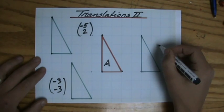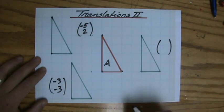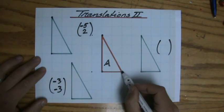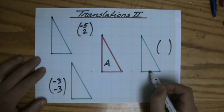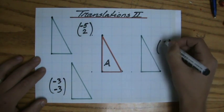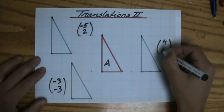Now the last one. What is the column vector belonging to this particular translation? We'll do that point. It goes one, two, three, four to the right, so a positive. And zero up and down.